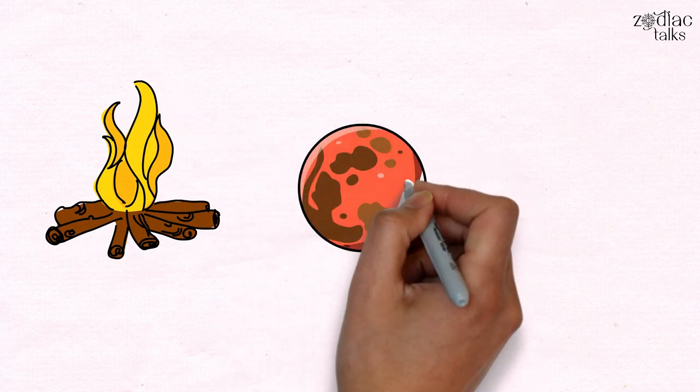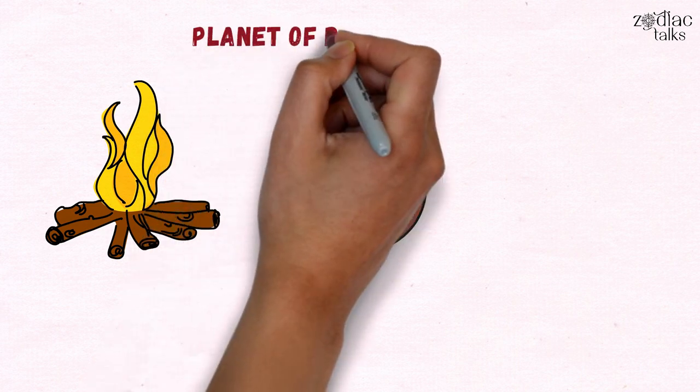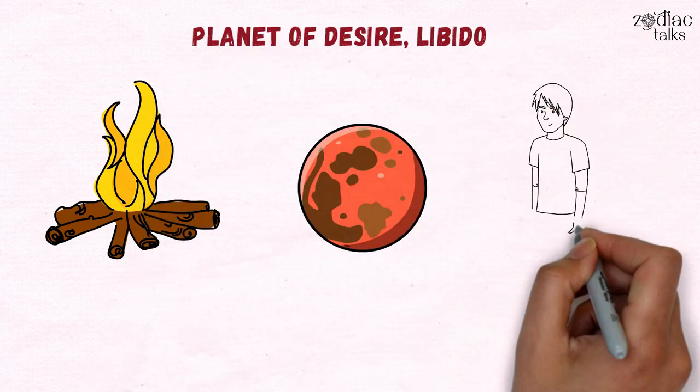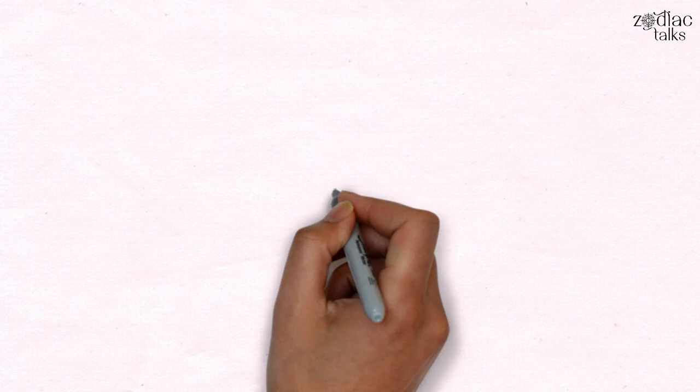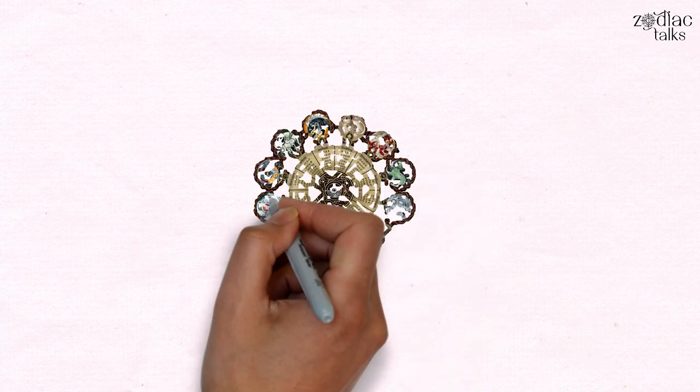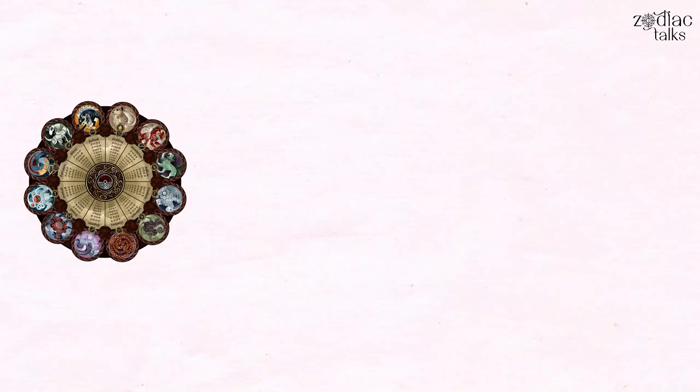This passionate zodiac sign is ruled by Mars, the planet of desire, libido, and the fulfillment of our physical urges. So it's no surprise to learn that Aries is one of the fieriest signs on the zodiac.